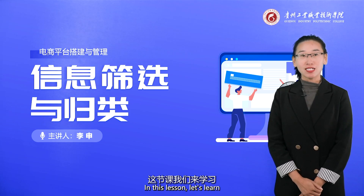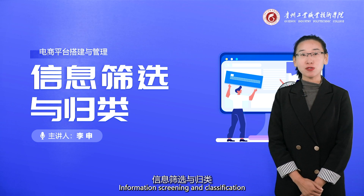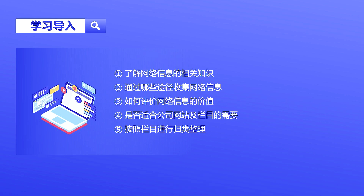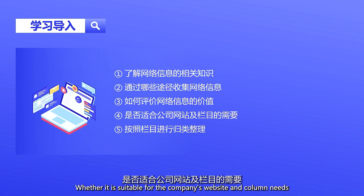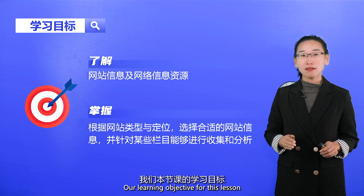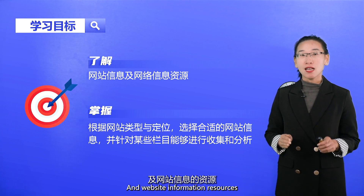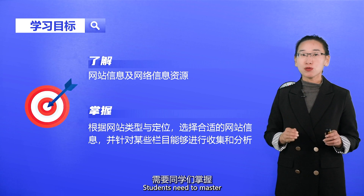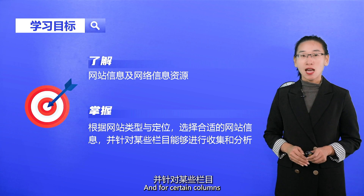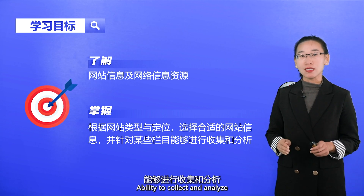Hello everyone. In this lesson, let's learn about information screening and classification. First, let's understand the knowledge of network information: by what means do we collect network information? For the collected network information, how do we evaluate whether it is suitable for the company's website and column needs? We will also classify and sort according to column. Our learning objective for this lesson is to understand website information and website information resources. Students need to master how to choose the right website information depending on site type and positioning, and for certain columns, develop the ability to collect and analyze.